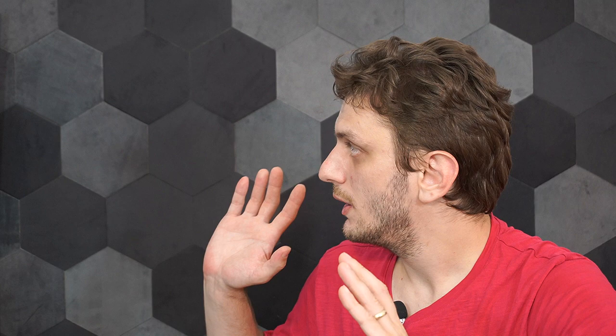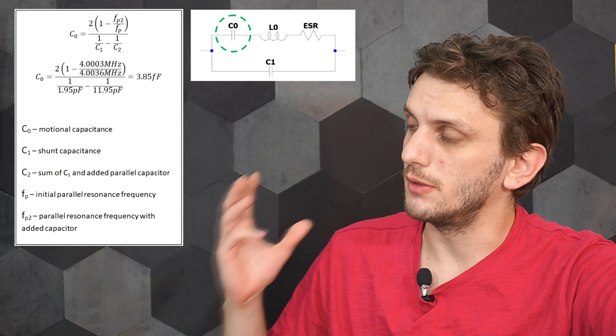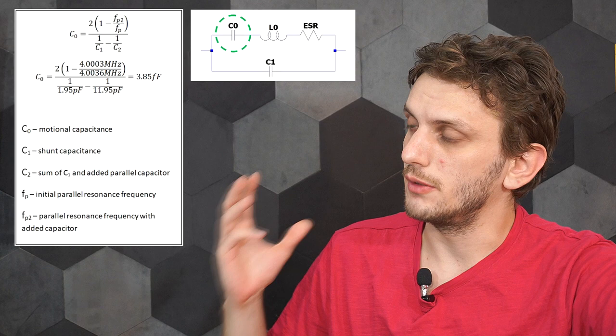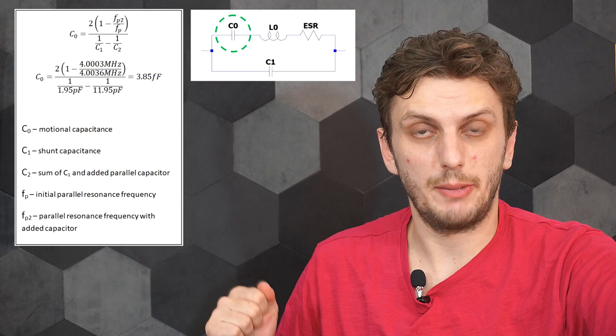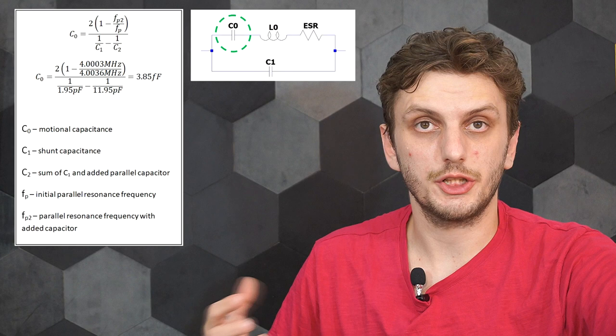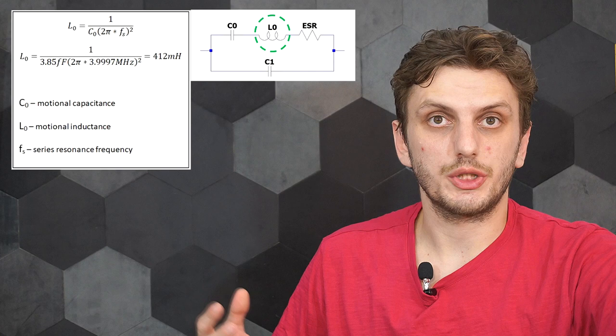Point being that from this we can see that we need more than 10 picofarads to get it to that value. But anyway, now let's see how we can calculate our parameters. So without going into too many details, I put the formulas up here. So first of all we can calculate the motional capacitance based on our two resonance frequencies, once with the capacitor added and once without the capacitor added, and also taking into account the initial shunt capacitance that we calculated previously. And using this value together with our series resonance frequency, we can also calculate our motional inductance.